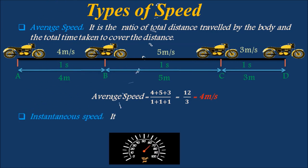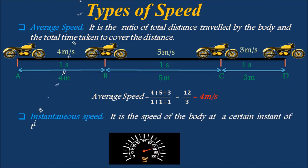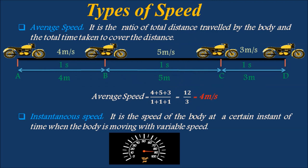Instantaneous speed is the speed of the body at a certain instant of time when the body is moving with variable speed. Now let's discuss about velocity.